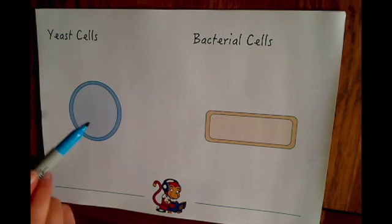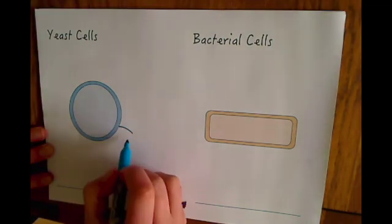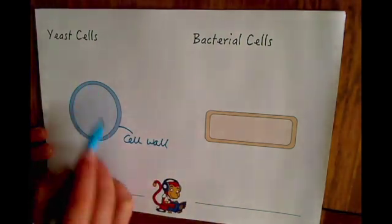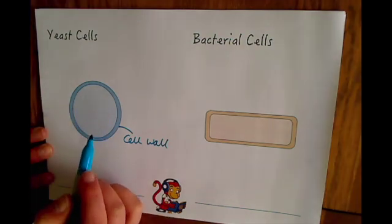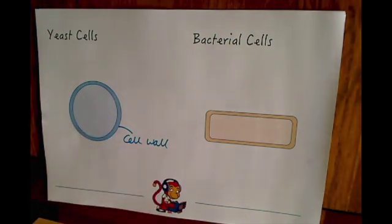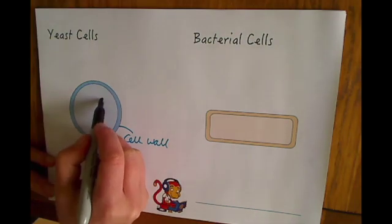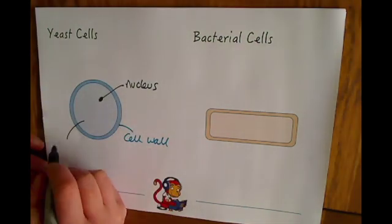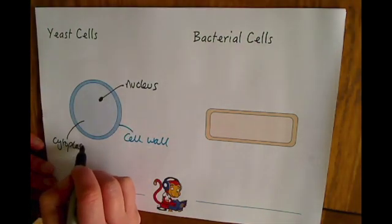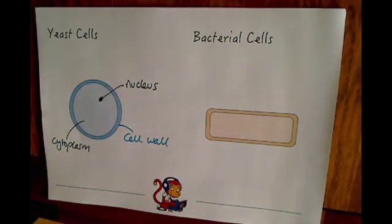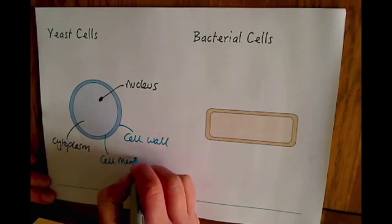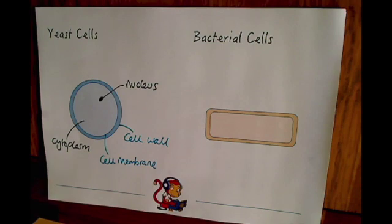And the yeast here looks quite similar to an animal cell or how we draw an animal cell, but it has obviously a cell wall which the animal cells don't. So if you see a kind of circular structure with a cell wall then that is going to be a yeast cell. It still has a nucleus to control the cell activity, the cytoplasm in the middle where the chemical reactions occur, and it also has the cell membrane to allow substances in and out of the cell as well.